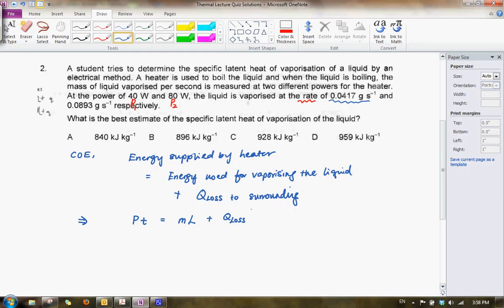Now, you also notice what we are given here is actually the rate at which mass is lost. So what we need to do is divide the whole equation by T. So we will have P equals to M over T times L plus Q loss, the rate at which heat is lost. And in general, this is the rate.